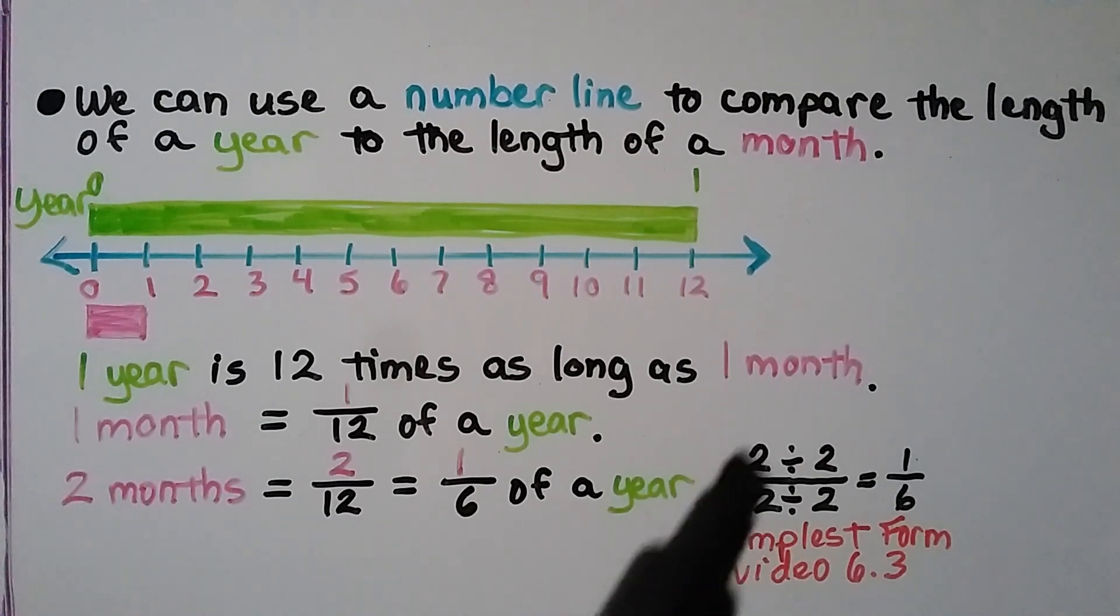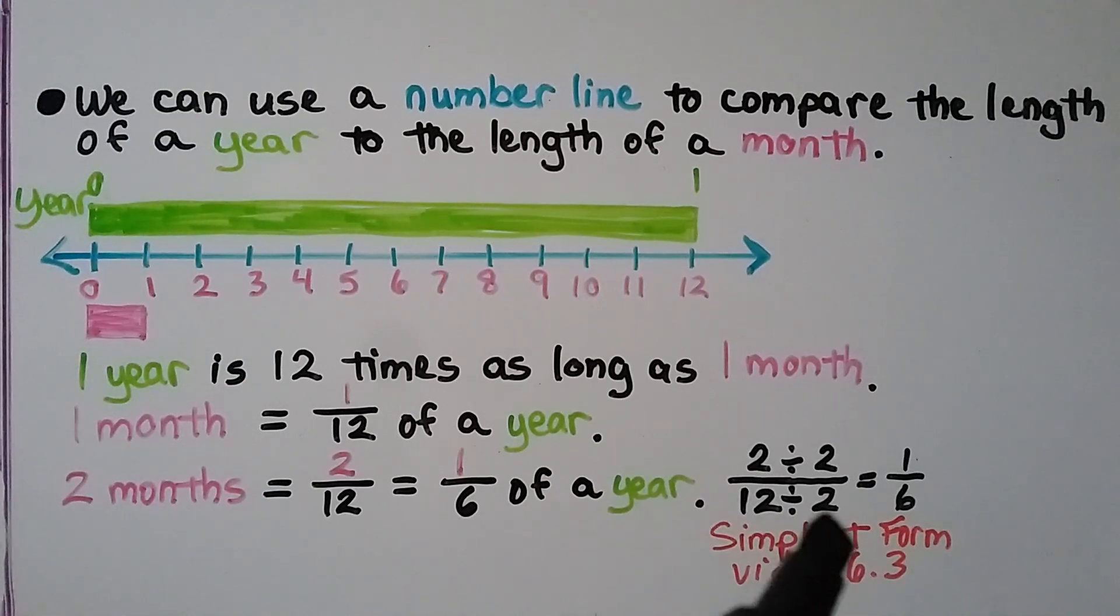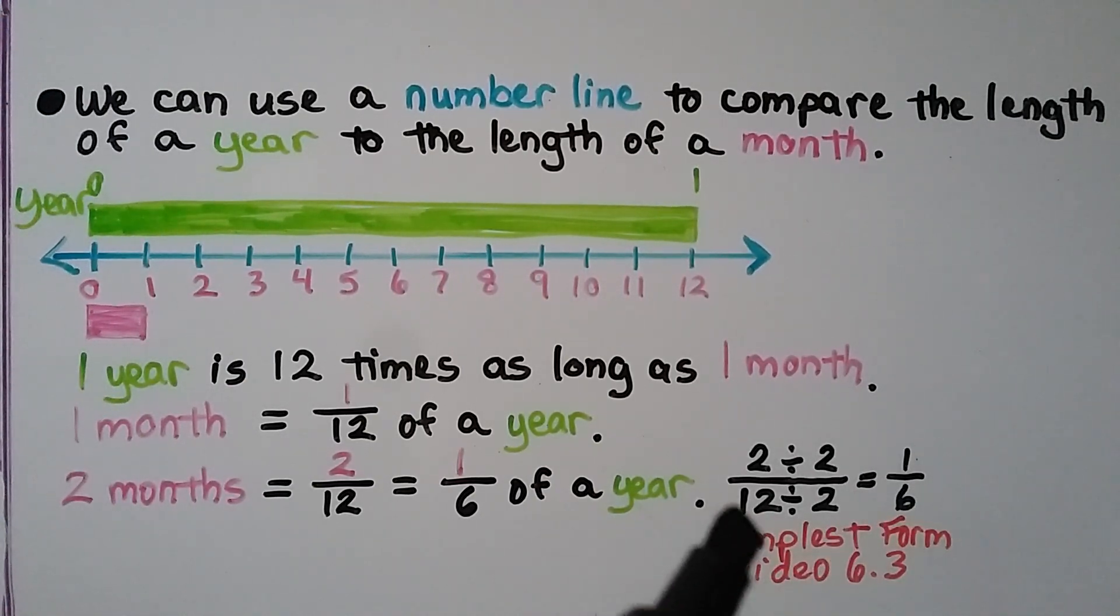Remember, we find a common factor for 2 and 12, and they have the number 2 in common. We do 2 divided by 2, which is 1, and 12 divided by 2, which is 6. And if you are confused about that, there's a link to how to do simplest form in video 6.3 that we did before. Just check the description.